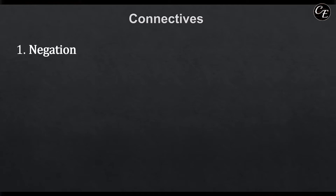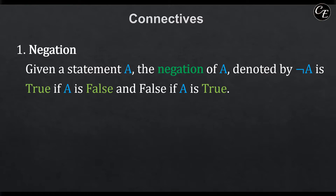Let us proceed with our discussion on connectives. Statements alone cannot be very useful in mathematical logic unless you connect them with other sentences, so these connectives can be used to make simple sentences into complex ones. One of these connectives is the negation. Given a statement a, the negation of a, denoted by 'not a,' is true if a is false and false if a is true. This symbol represents the negation connective, and what it does is inverse the truth value of a.